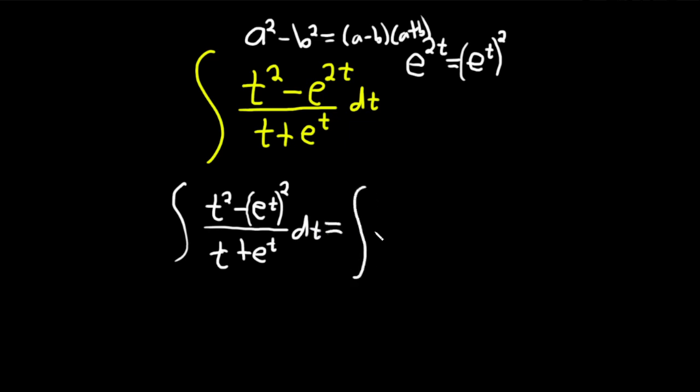So this is equal to the integral of, so our a here is going to be t and our b is going to be e to the t. So it'll be t minus e to the t and that's all over t plus e to the t. And then we have our dt.